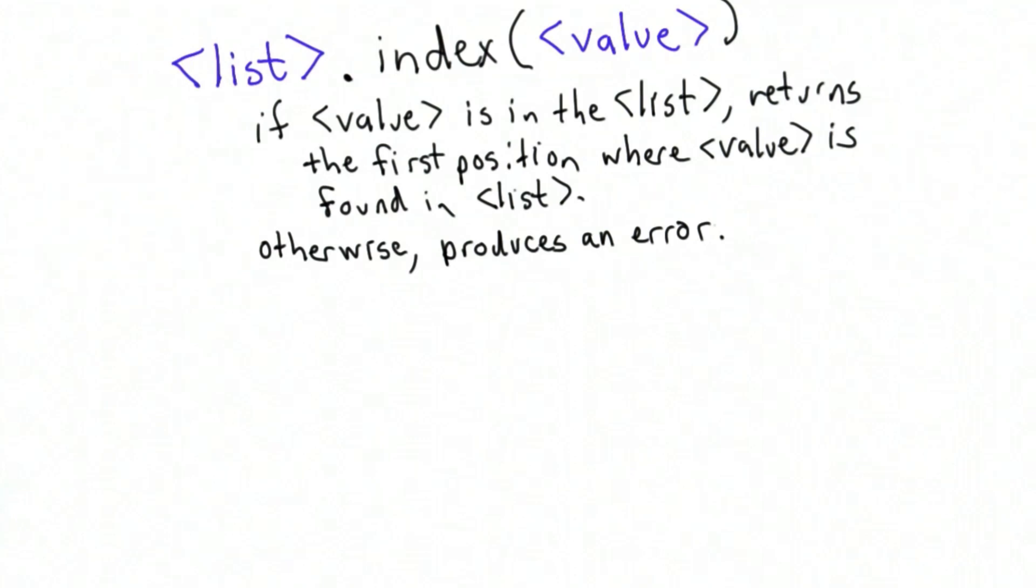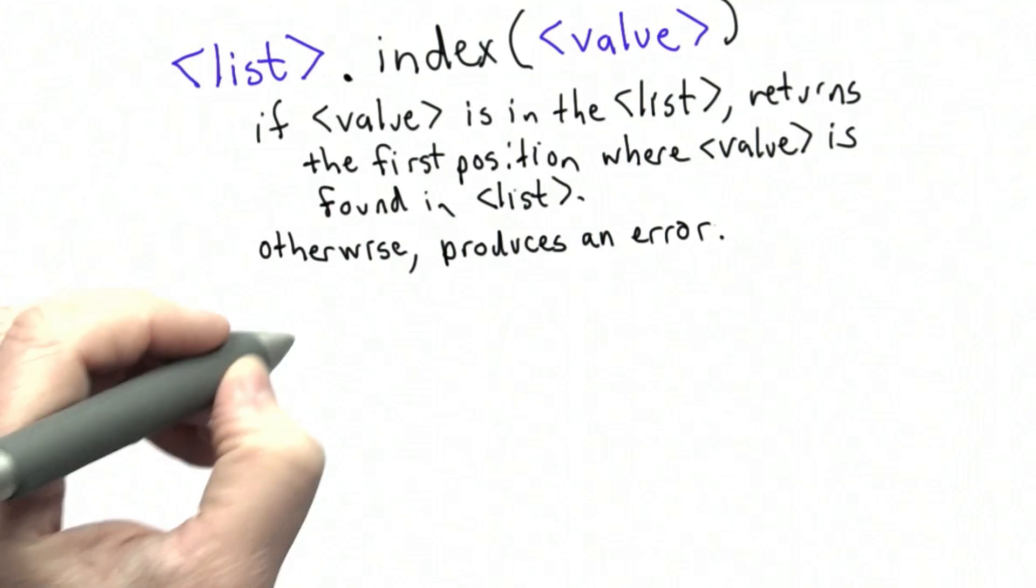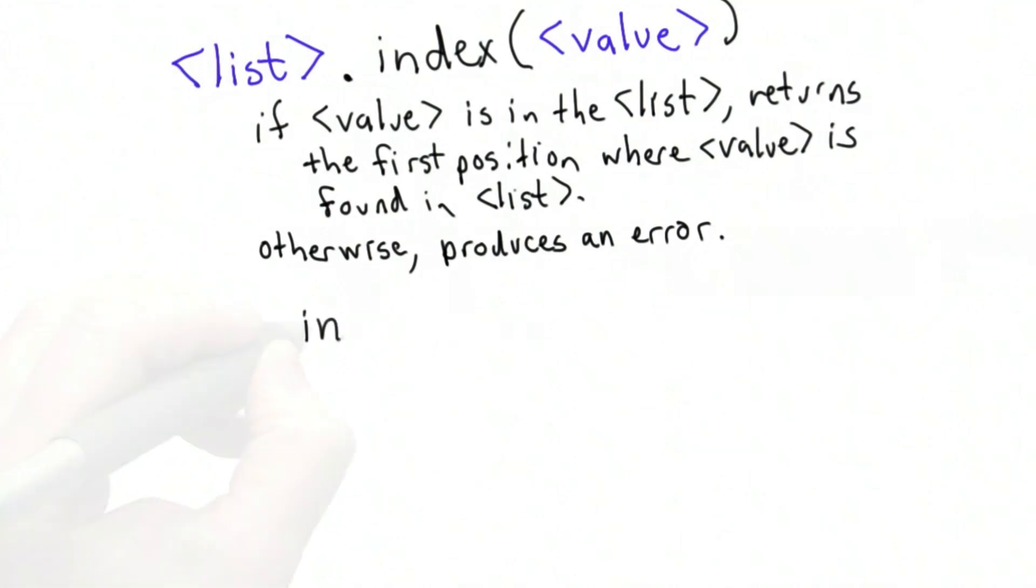There's another list operation that will be useful to allow us to use index to find element, and it's useful for many other things, and that's the in word. We've already seen in being used in the for loop. Here we use the same word in, but in this context it means something different.